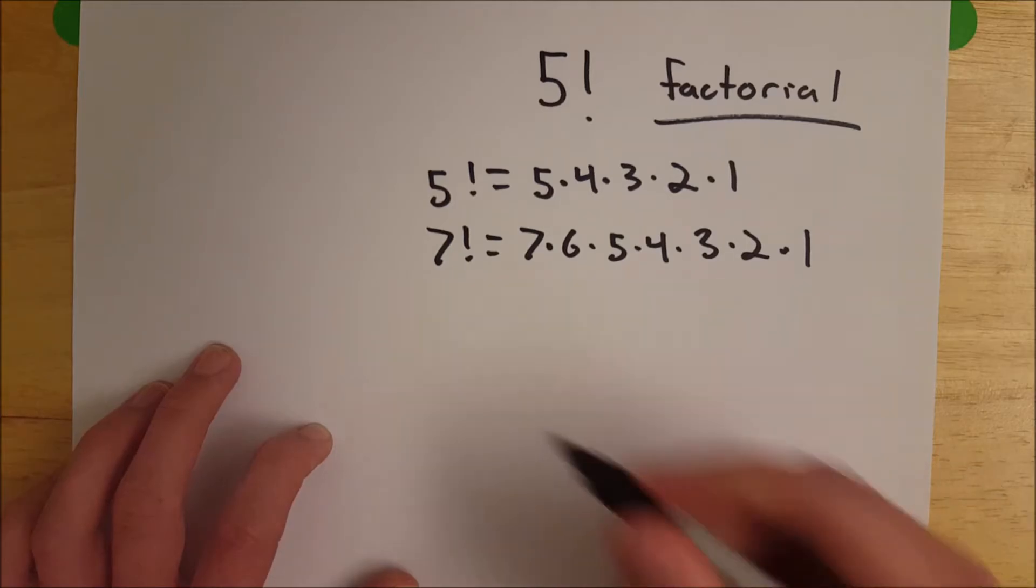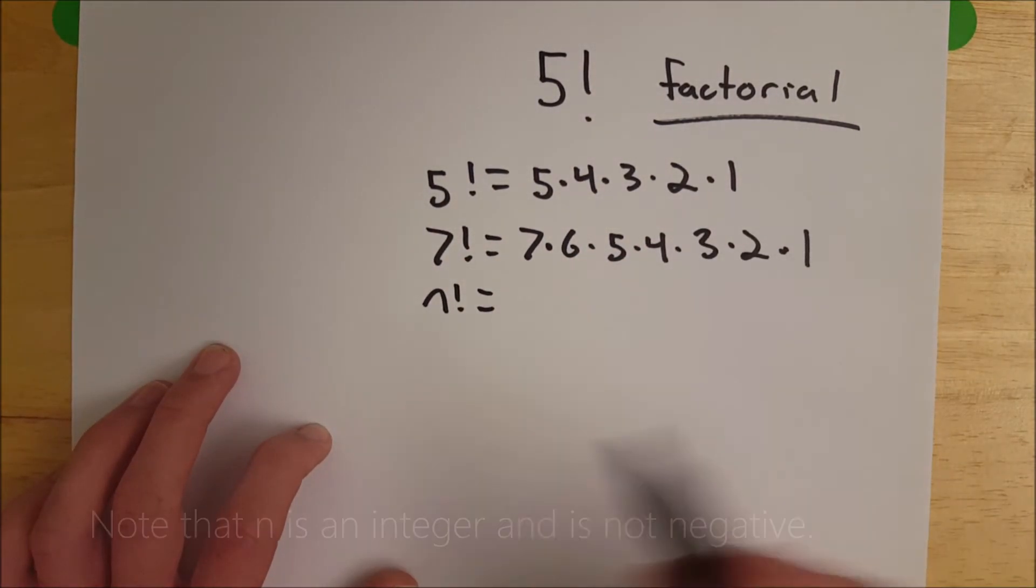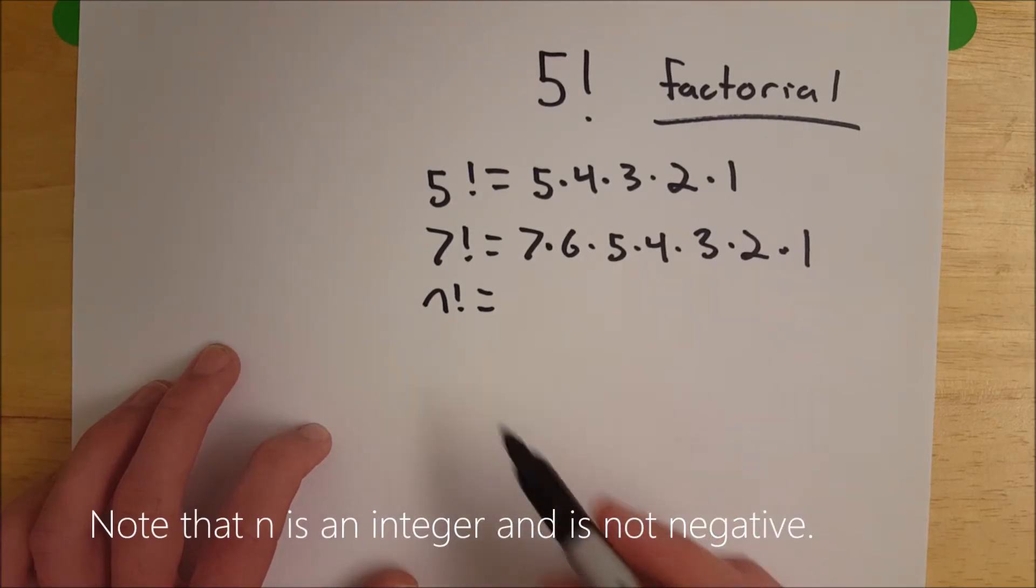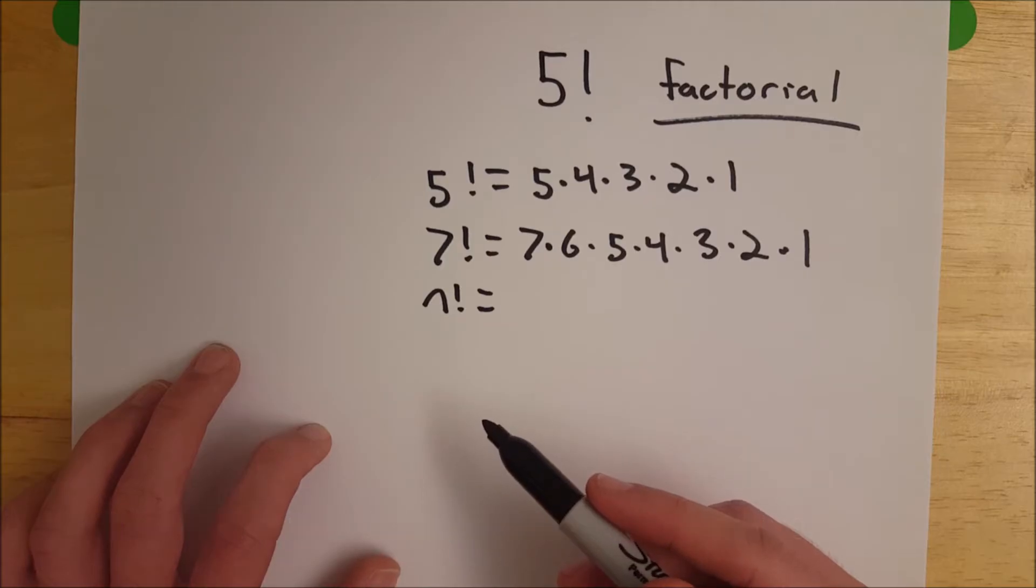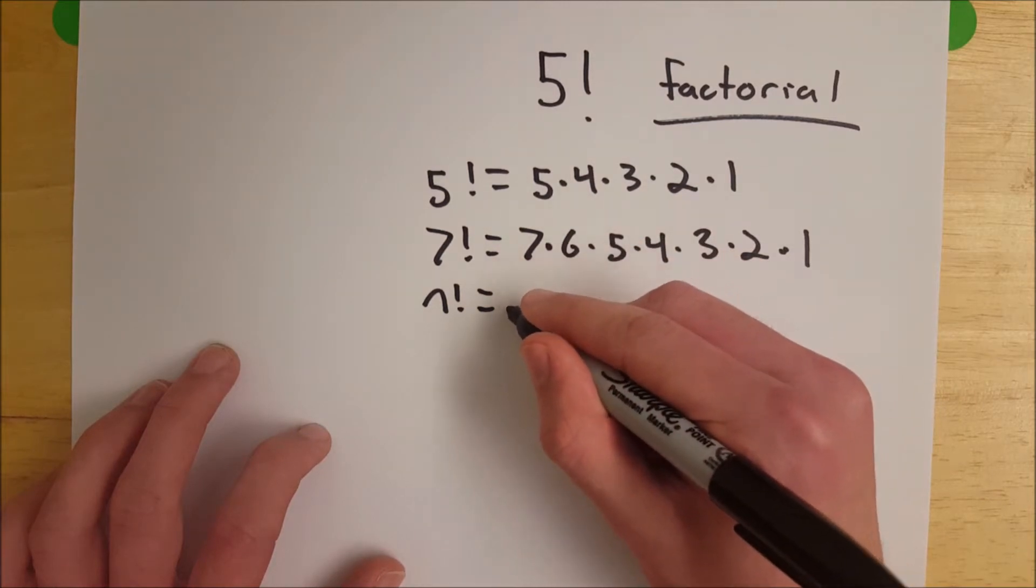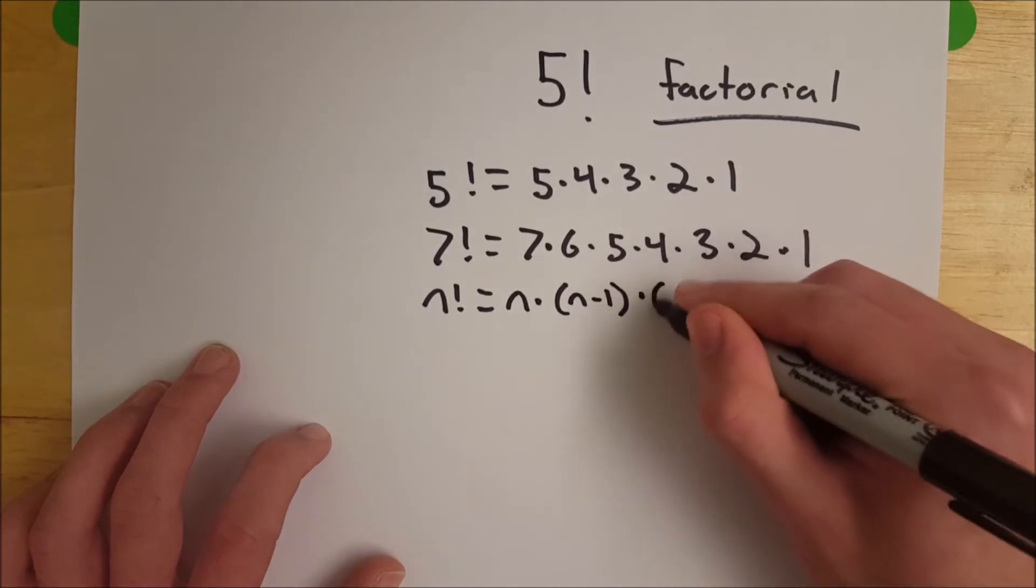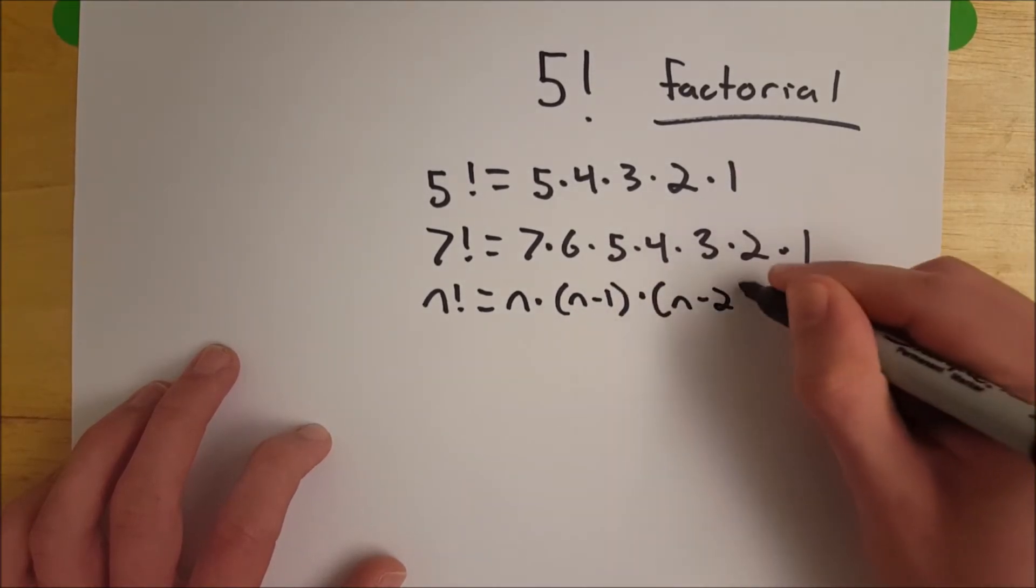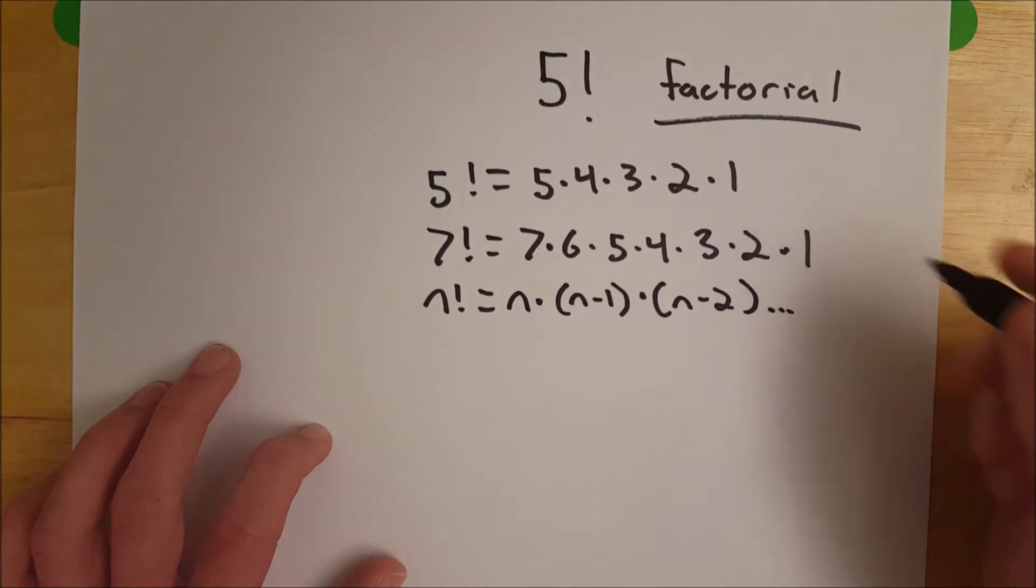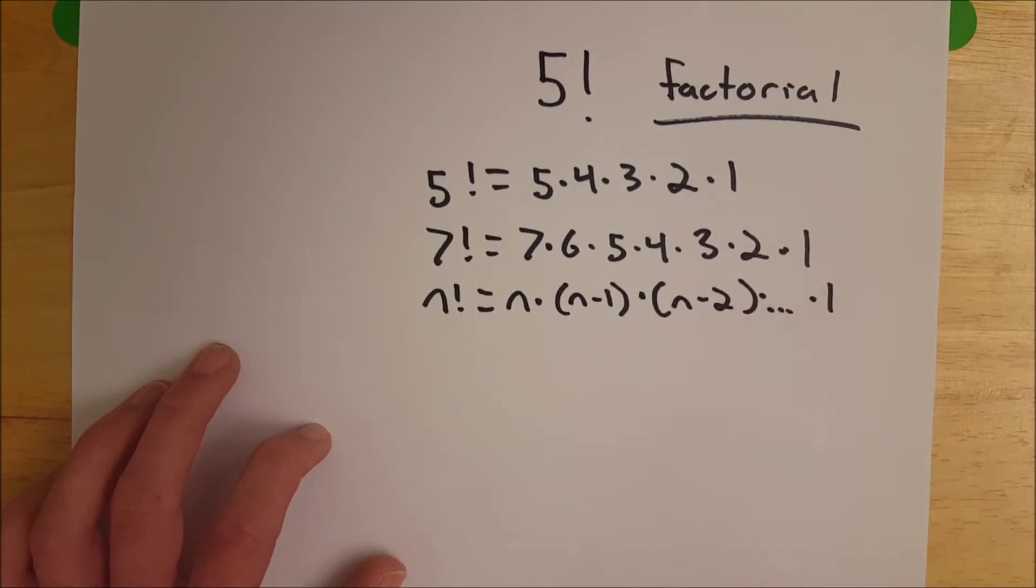So if you don't see the pattern yet, let's check out generic n factorial. Any number factorial, let's call the number n, n factorial is equal to the product of all positive integers less than or equal to n. So for n factorial, it would be n multiplied by n minus one multiplied by n minus two, and so on, multiplied by a bunch of stuff, and then finally multiplied by one, and that's where you stop.